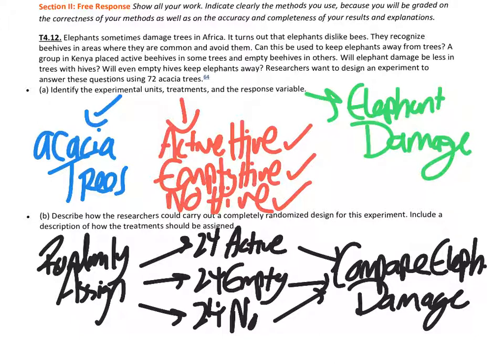Those trees — the first 24 — will get the active beehives. The trees associated with the next 24 digits, again not including repeats, will get the empty beehives. The remaining trees that were not picked will get no beehives whatsoever.